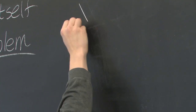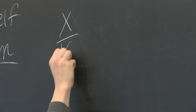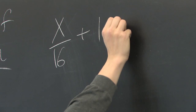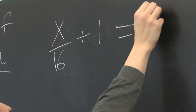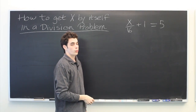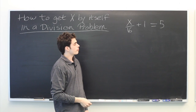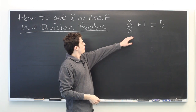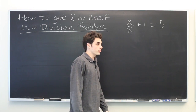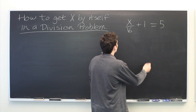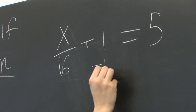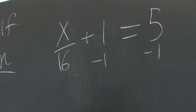Suppose that you're given x divided by 16 plus 1 equals 5. First, what you want to do is bring over the constants all to one side of the equation. You can do that by subtracting 1 from both sides.